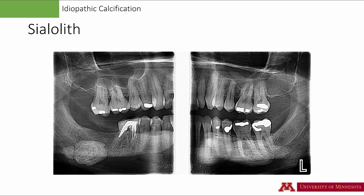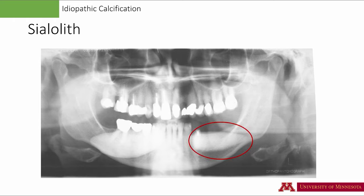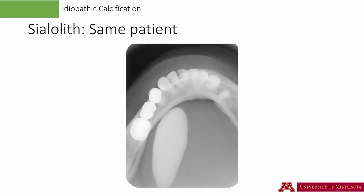On this extraoral bitewing radiograph, two sialoliths are present on the right side — the margins are smooth and the internal content shows multiple layers. On the right side, we have a large uniformly dense sialolith extending from the area of the premolars to the area of the second molars. The fuzzy radiopacity superimposed over the left posterior mandible is a ghost image. You may also identify a calcified carotid atheroma plaque on the left side. The cross-sectional occlusal radiograph shows the massive sialolith on the right side — the outline is smooth, the elongated shape conforms to the shape of a salivary duct, and this is completely radiopaque without any evidence of layering.